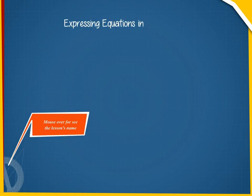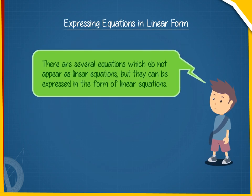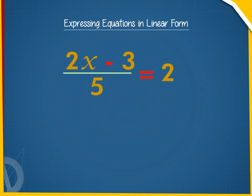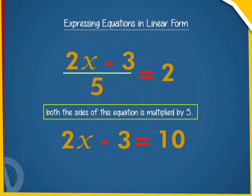Expressing equations in linear form. There are several equations which do not appear as linear equations but they can be expressed in the form of linear equations. For example, 2x minus 3 upon 5 is equals to 2 can be expressed as 2x minus 3 equals to 10 when both the sides of this equation is multiplied by 5.